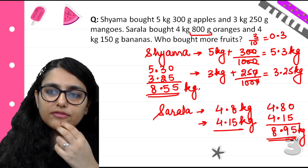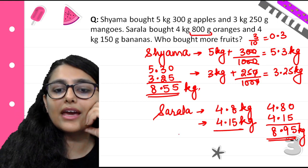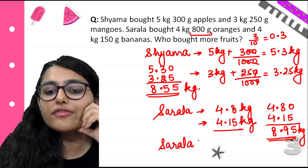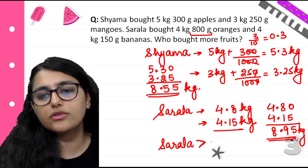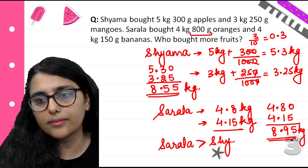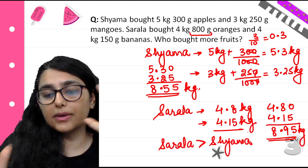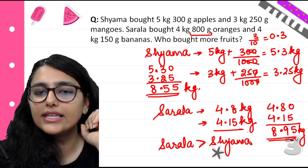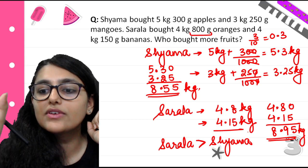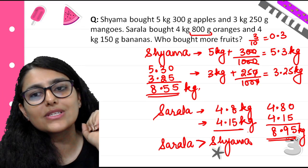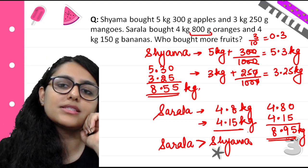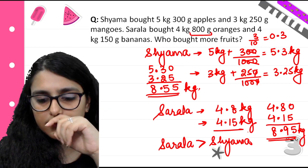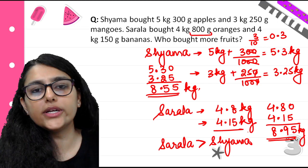Sadla's total is 8.95 kg. Now we can compare — both have 8 kg, but Shama has 0.55 kg and Sadla has 0.95 kg after the decimal. So obviously Sadla brought more fruits by weight.